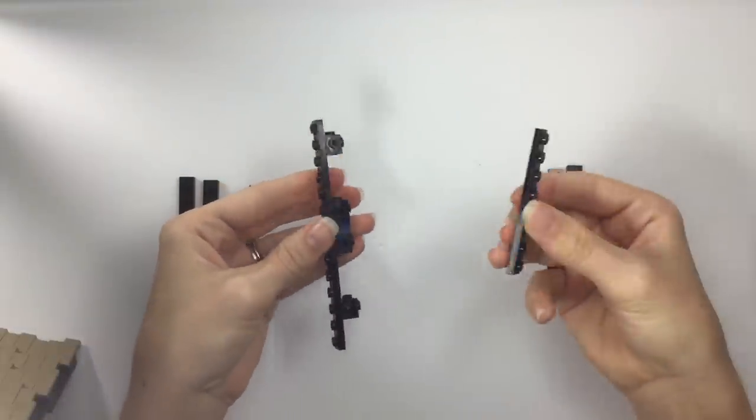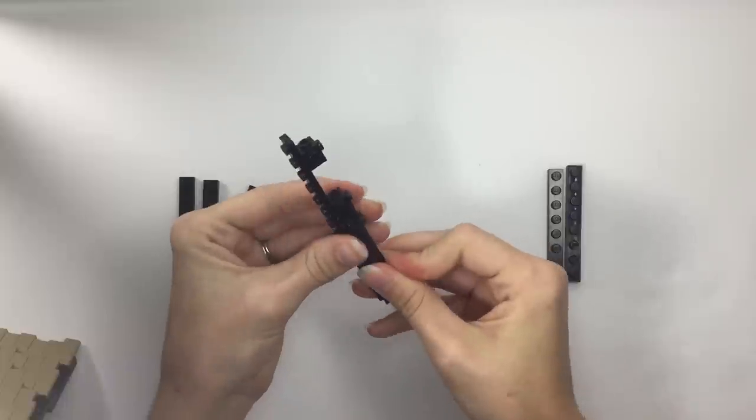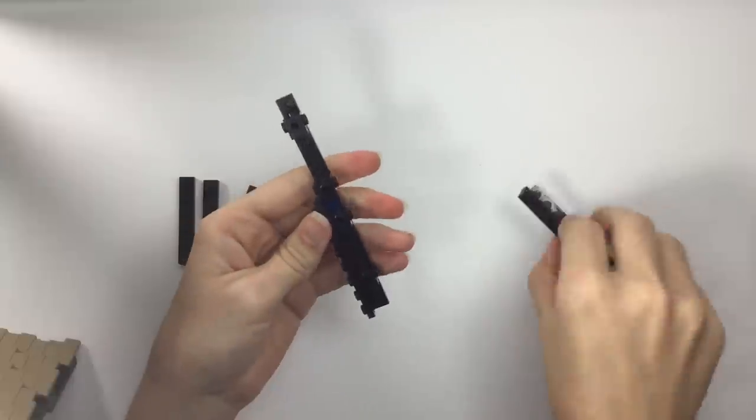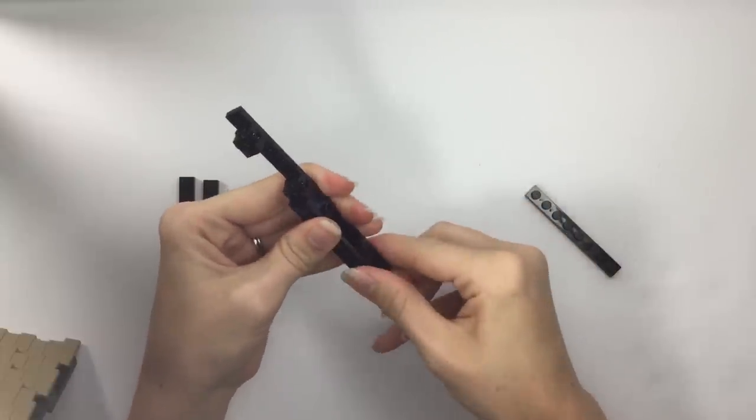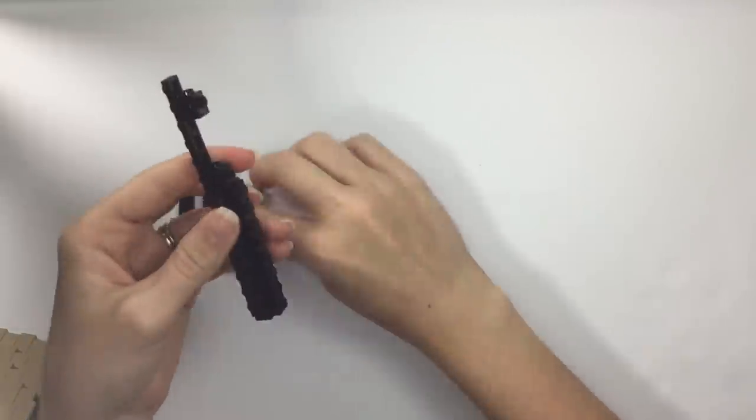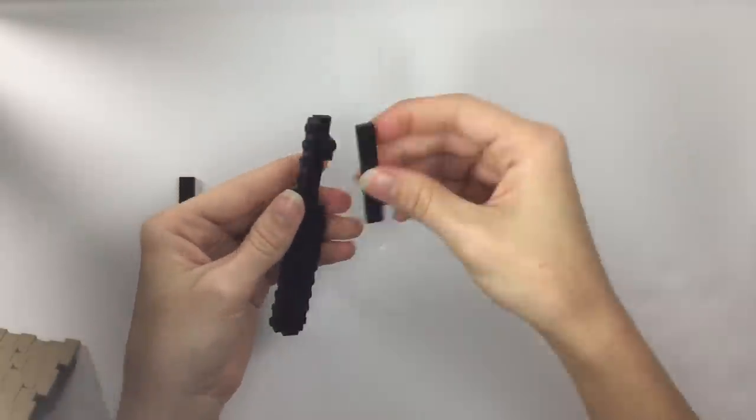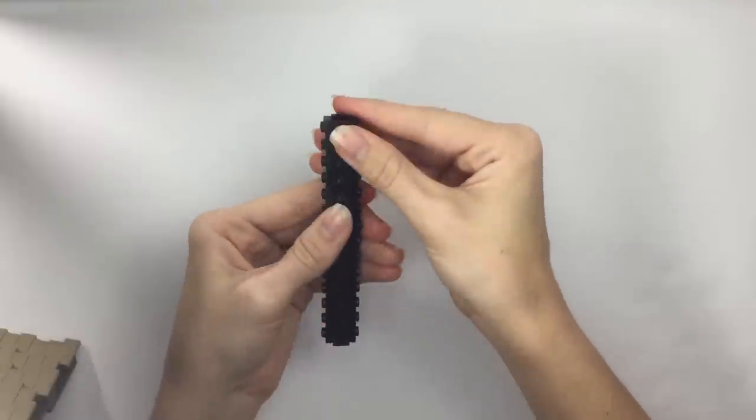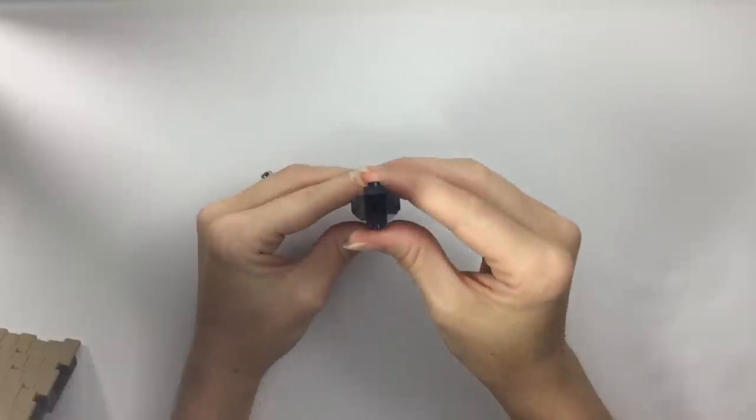Then we cover this on all sides so that we get a nice SNOT column. So it's going to look like this in the end.